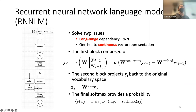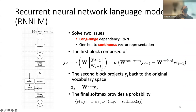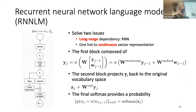From the previous lecture, recurrent neural networks can capture long-range dependency — so that problem is solved. Also, the input one-hot vector is multiplied by a matrix, which converts it to a continuous dense vector. So by using a recurrent neural network, we convert the one-hot information to a continuous embedding vector and also capture long-range dependency. This is the power of the recurrent neural network: it solves two critical problems of n-gram at the same time.